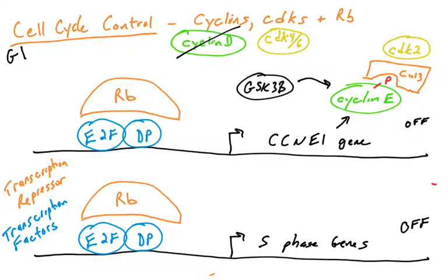As we covered in a previous video, ubiquitin ligases conjugate ubiquitin to a protein, allowing it to be sent to the proteasome and destroyed. So in G1, cyclin D and E levels are kept very low through a number of different mechanisms, and that leads to S phase genes being kept in the off position.